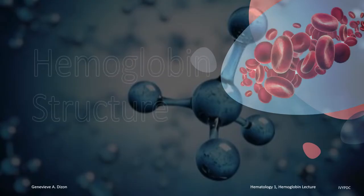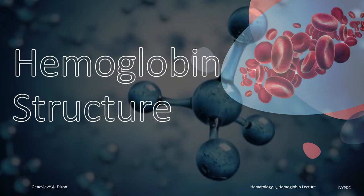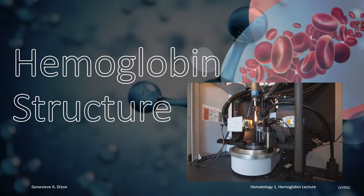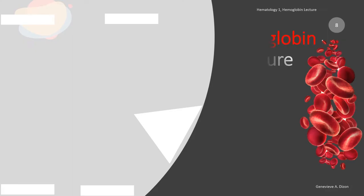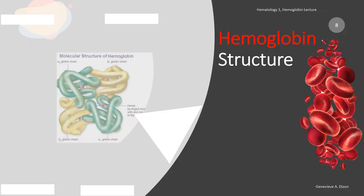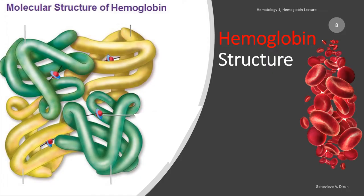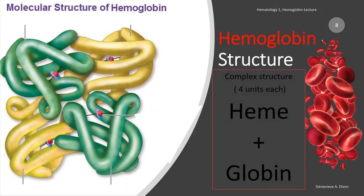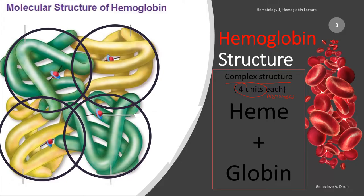Let's now proceed to the topic at hand: hemoglobin structure. The hemoglobin structure refers to what makes up a hemoglobin and how a hemoglobin looks like. It is described as a globular protein with a very complex structure. It is considered complex because it makes up four units or four monomers. Each unit is made up of a heme and a globin, hence the name hemoglobin. Now since it has four units or four monomers, a hemoglobin is usually referred to as being a tetramer and having a quaternary structure.